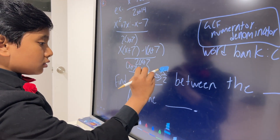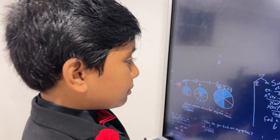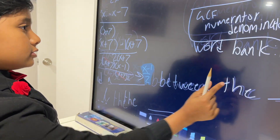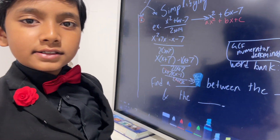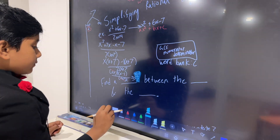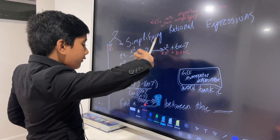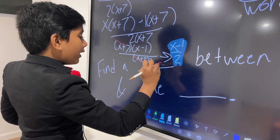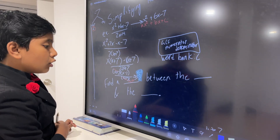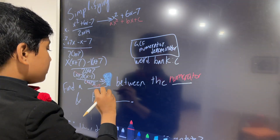Let's highlight it. How do you simplify a rational expression? GCFs are important when simplifying fractions. So of course we have to find a GCF — a GCF between the numerator and denominator.